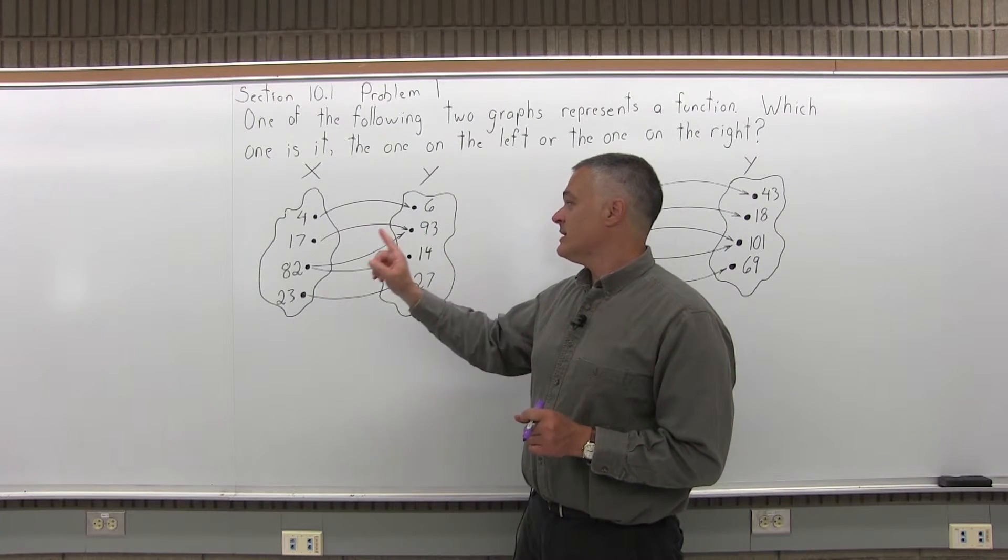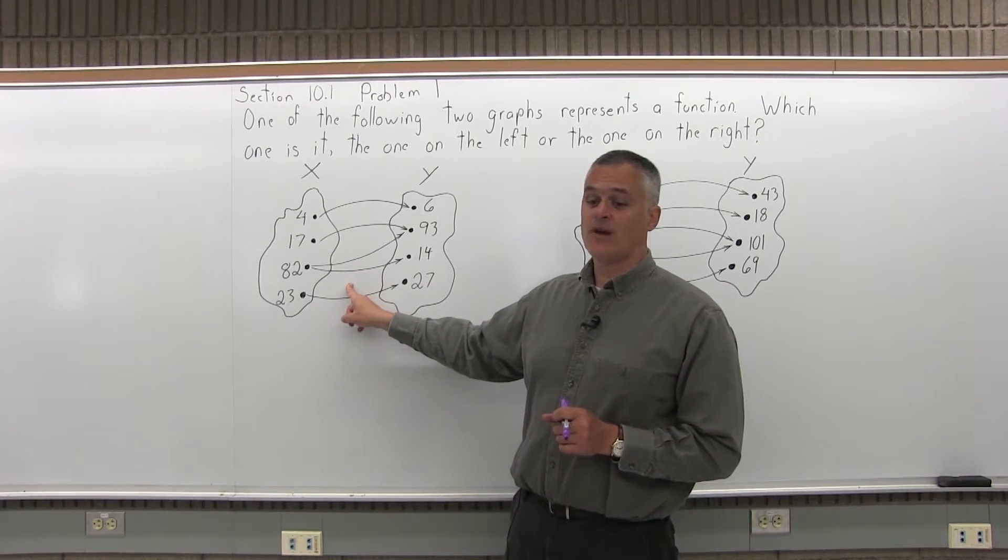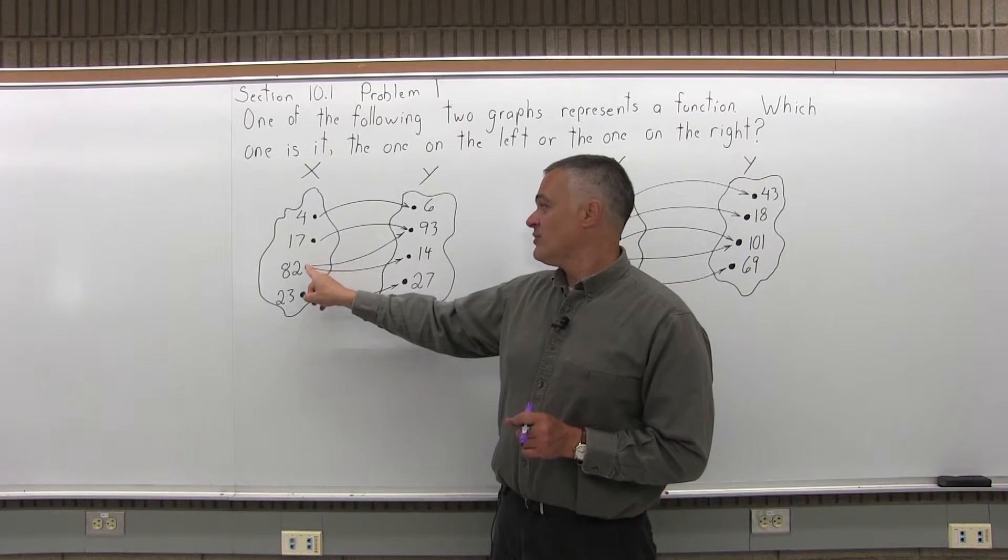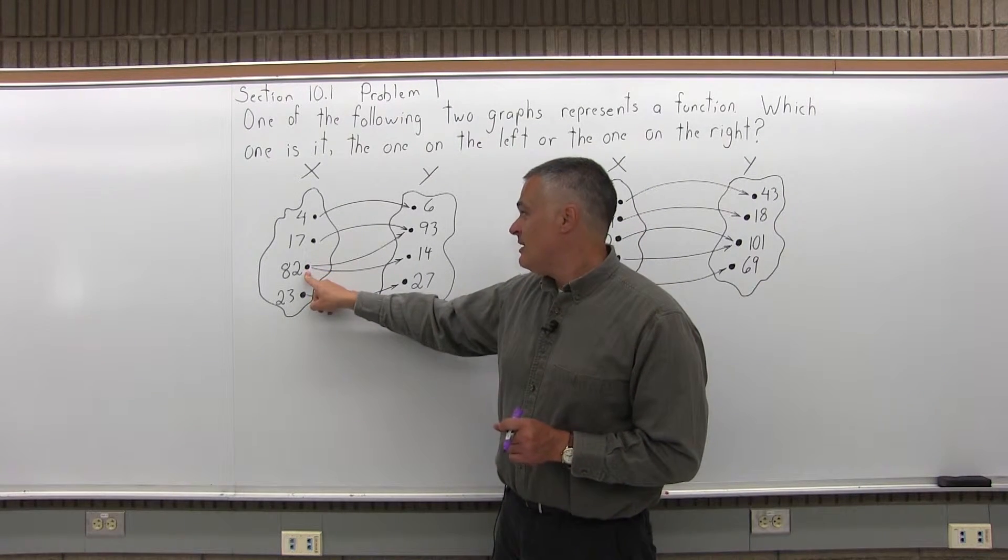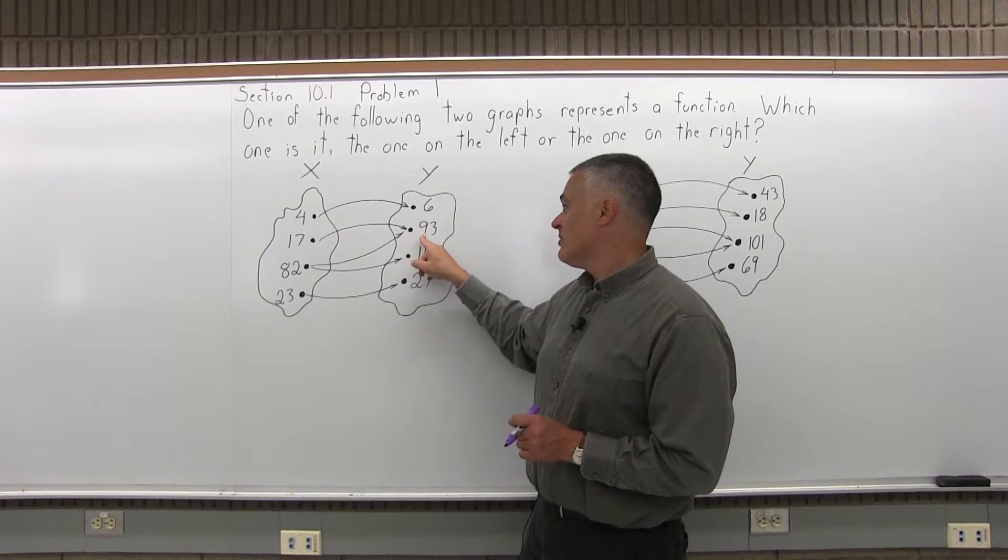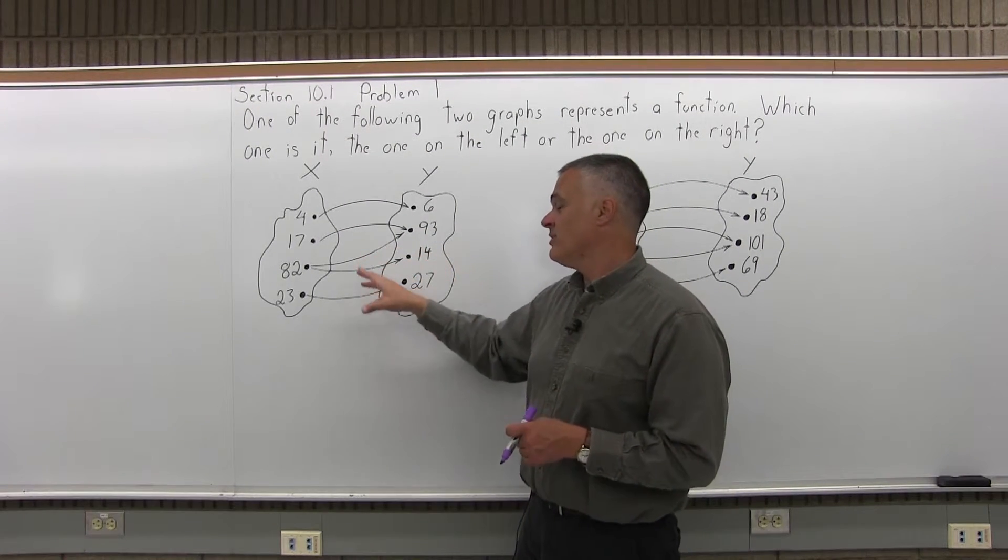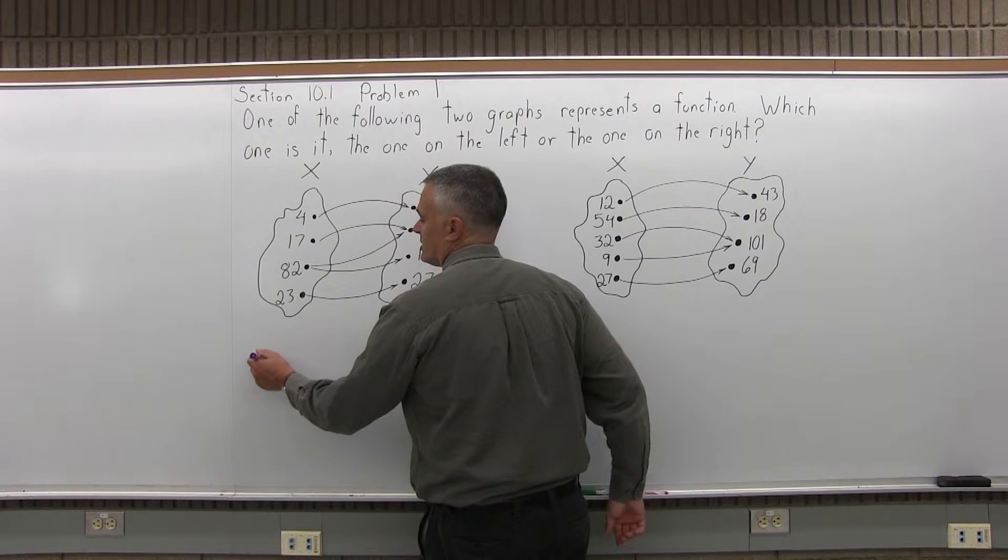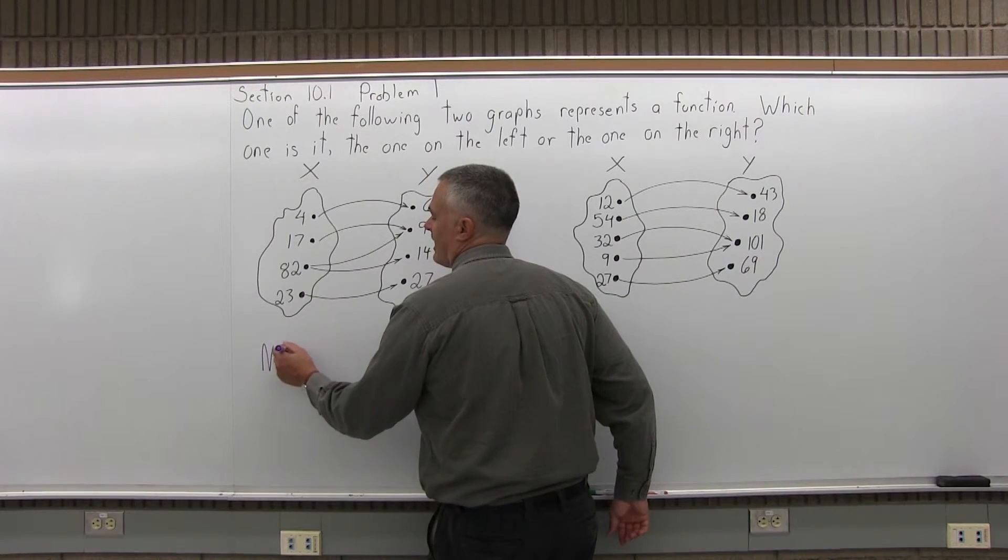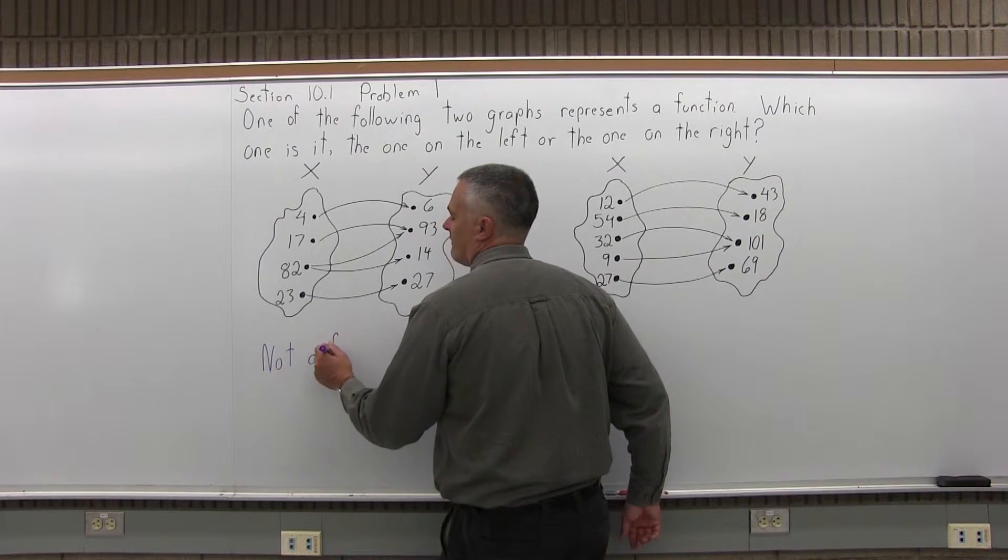And the one rule is broken on the graph on the left. Because if you put in an 82, the function doesn't know whether to give out a 93 or a 14. You break the one rule. So the graph on the left is not a function.